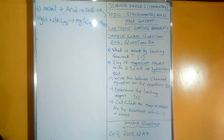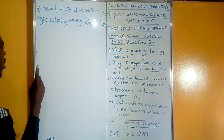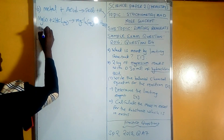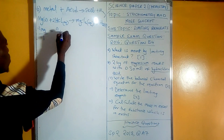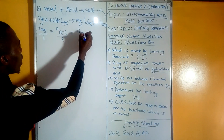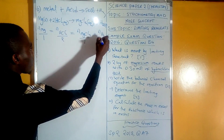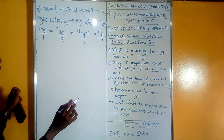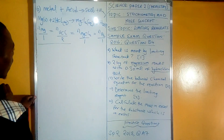Having balanced the equation, the next question asks to determine the limiting reagent. Always write the balanced chemical equation first, then express it in mole ratios. This gives: moles of Mg / 1 = moles of HCl / 2 = moles of MgCl₂ / 1 = moles of H₂ / 1. Since we are determining the limiting reagent, our interest is on the reactant side.